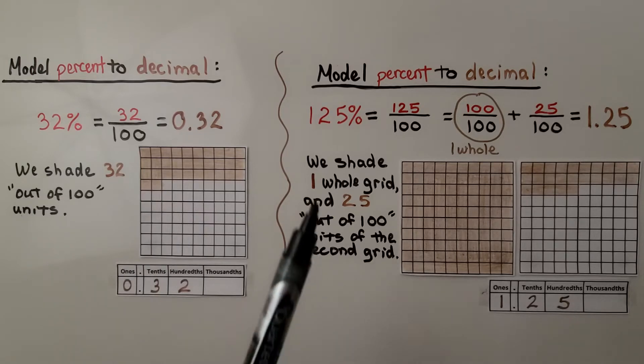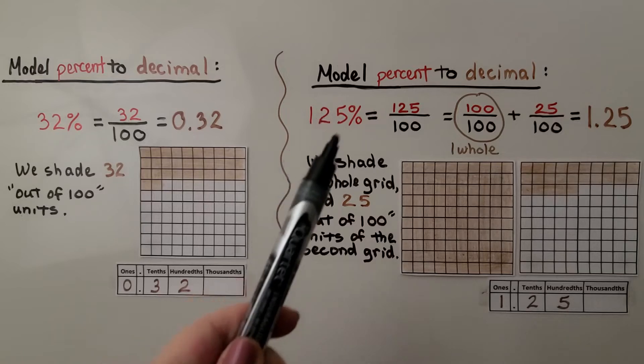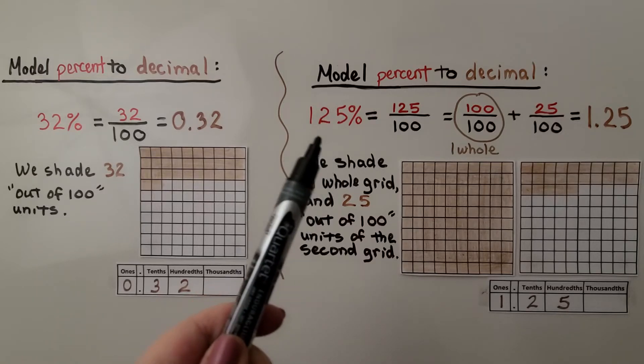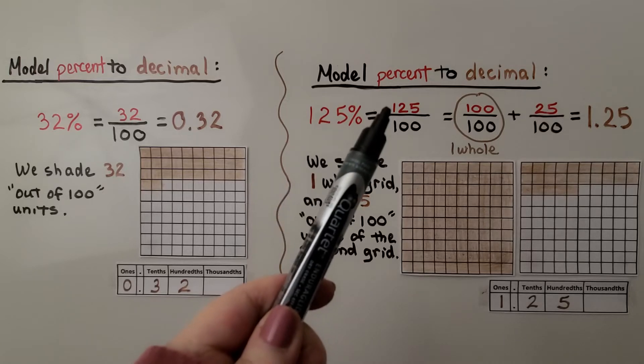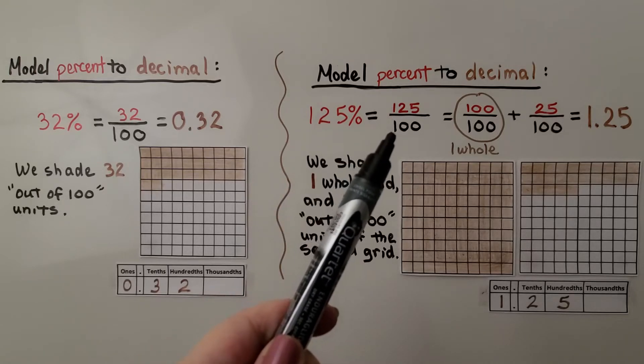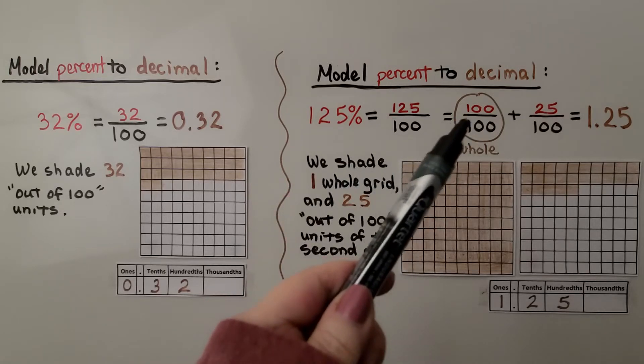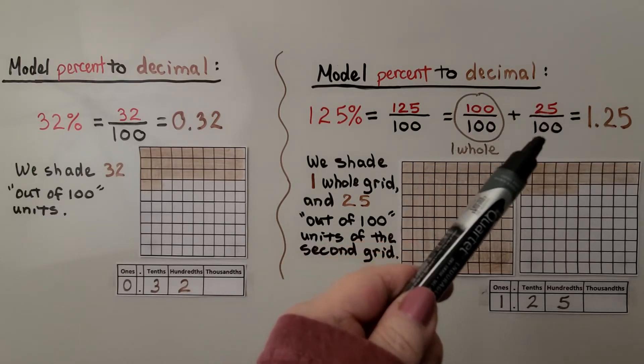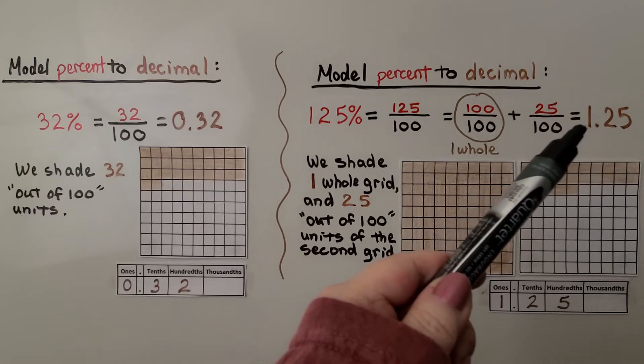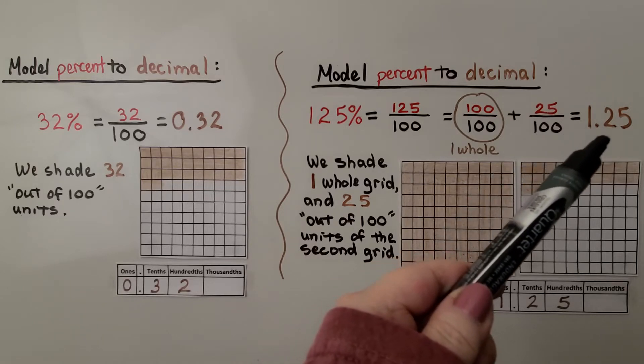And to model percent to decimal for an amount that's more than one, greater than one, we have 125%. That's 125 hundredths. We have 100 hundredths as one whole, same numerator and denominator, plus an additional 25 hundredths. That gives us 1 and 25 hundredths.